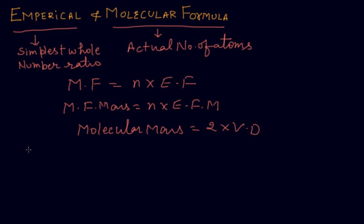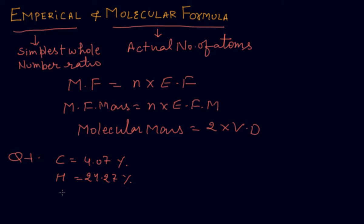Now we will solve a numerical to find the empirical and molecular formula. A compound contains carbon = 4.07%, hydrogen = 24.27%, chlorine = 71.65%, and the molecular mass given is 98.96. We will discuss how to find the molecular formula.